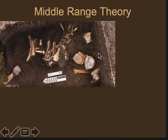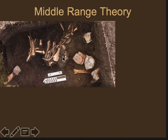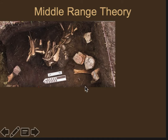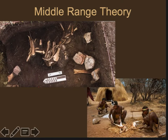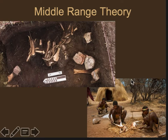I think of middle range theory as the Google Translate of archaeology. If you put Turkish into Google Translate it spits out the equivalent in Russian. In middle range theory, you're trying to build up a base of knowledge where you're able to translate patterns of garbage, patterns of debris, things left behind, patterns of tools, patterns of bones — and figure out what behavior produced that pattern. What behavior produced this garbage and this scattering of bones? Archaeologists use ethnography — the study of living people — and also experimental archaeology to do this.